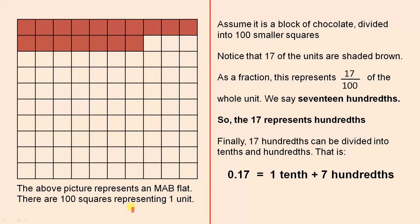The above picture represents an MAB flat. There are one hundred squares representing one unit. So all these squares here can represent one whole unit, whatever that might be. Assume it is a block of chocolate divided into one hundred smaller squares. It's been divided into one hundred smaller squares.